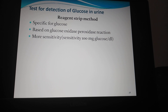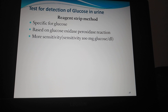Glucose can also be detected by reagent strip method. This test is specific for glucose and is therefore preferred over Benedict's test. It is based on the glucose oxidase-peroxidase reaction. This test is more sensitive than Benedict's qualitative test and specific only for glucose; other reducing agents give negative reactions. Sensitivity of the test is about 100 mg glucose per dl of urine.